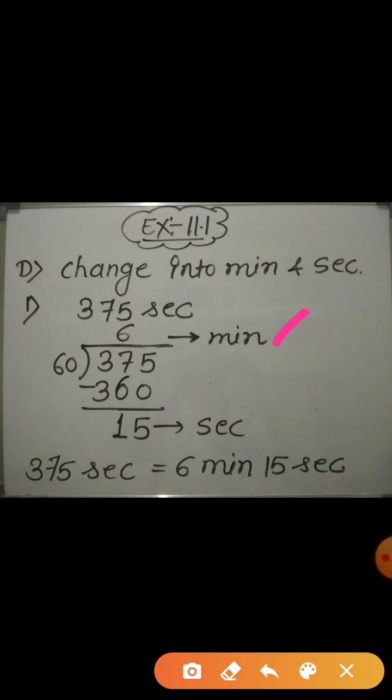Now, 6 is 36. Therefore, 60 into 6 will become 360. So here you can see I have divided 66, 360 and 375 minus 360 will become 15.